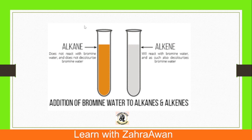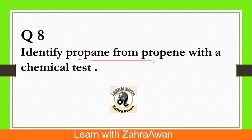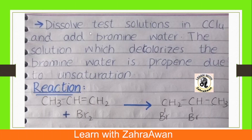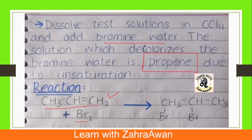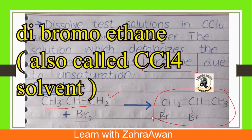For the identification test: we prepare bromine water and add propene to it. The reddish-brown color will discharge, proving that propene is an alkene (unsaturated). But if we add propane, the reddish-brown color will not discharge, proving that propane is an alkane (saturated) and does not give this test.